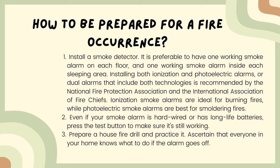How to be prepared for a fire occurrence? First, install a smoke detector. It is preferable to have one working smoke alarm on each floor and one inside each sleeping area. Installing both ionization and photoelectric alarms — or dual alarms that include both technologies — is recommended by the National Fire Protection Association and the International Association of Fire Chiefs. Ionization smoke alarms are ideal for burning fires, while photoelectric smoke alarms are best for smoldering fires.